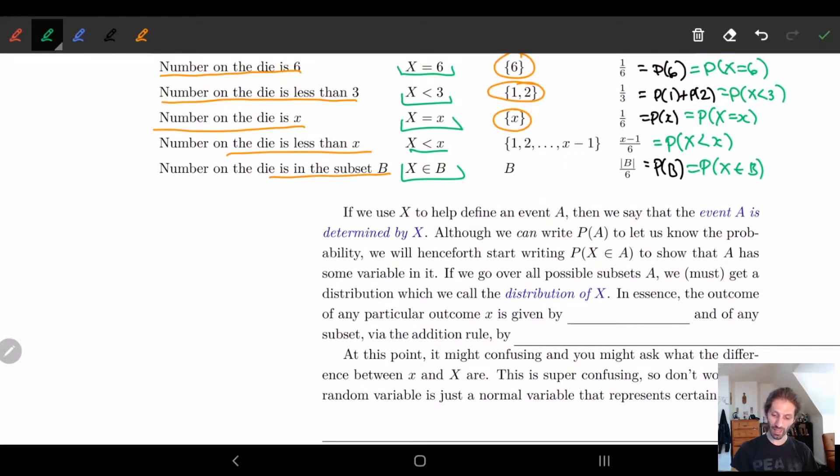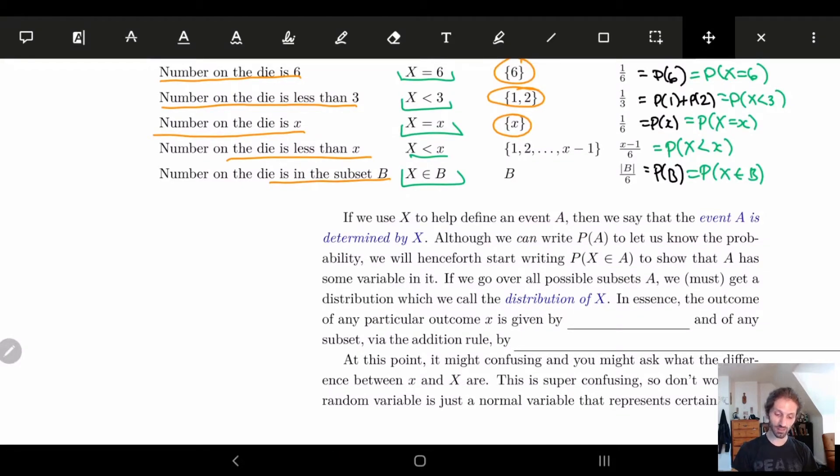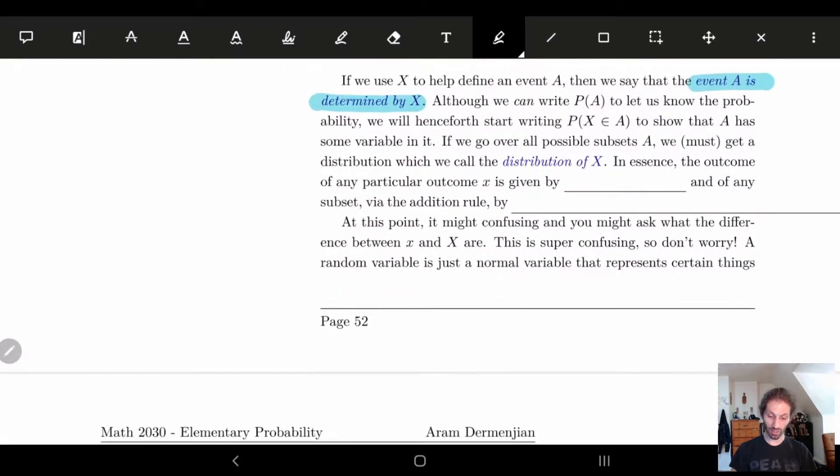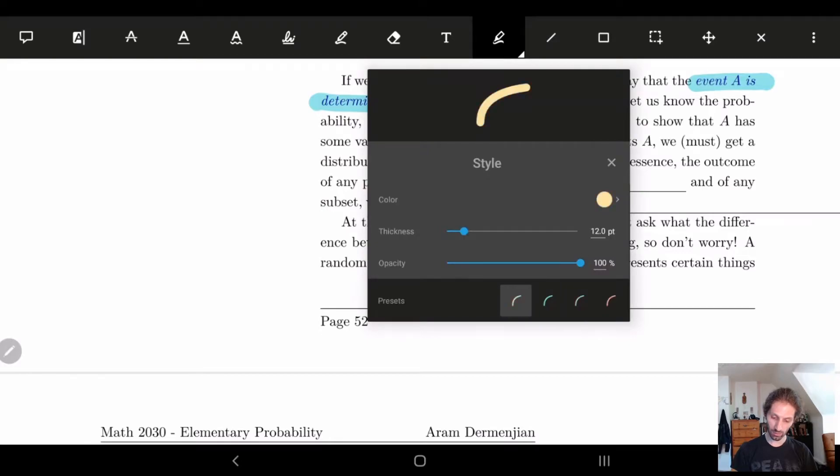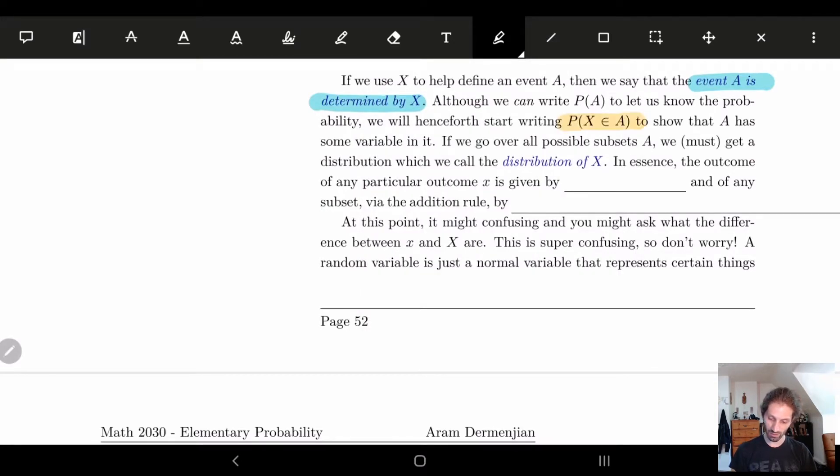If we use X, so if we're using some random variable X, and we use it to define an event A, then what we're going to say is that the event A is determined by X. As in, whatever we set the value of X to be, that's how the event A will be written. So yeah, we're going to start using this notation from here on out. I might occasionally forget and use the old notation. In that case, I am wrong. Don't follow me. Use this new notation.